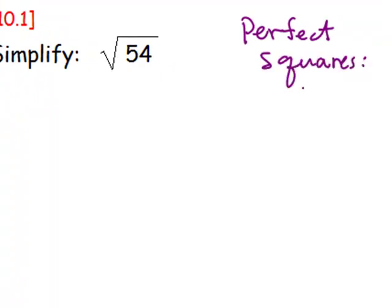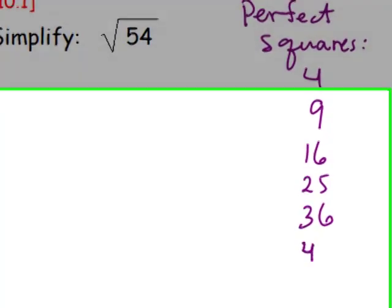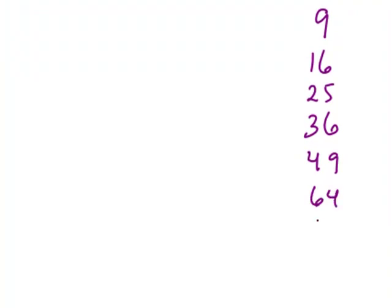Such as 2 squared is 4, 3 squared is 9, and 4 squared is 16, 5 squared is 25, 6 squared is 36, 7 squared is 49, 8 squared is 64, 9 squared is 81, and 10 squared is 100.